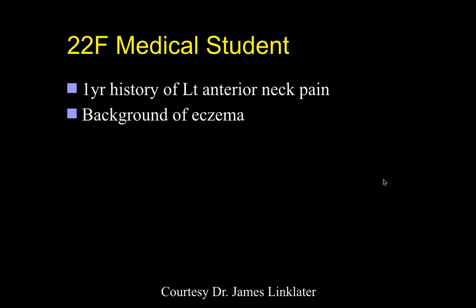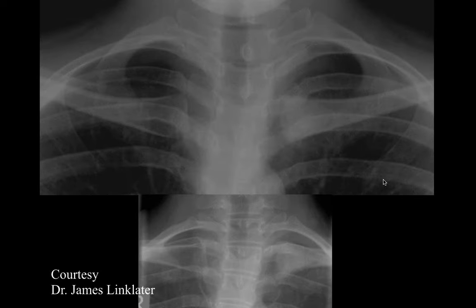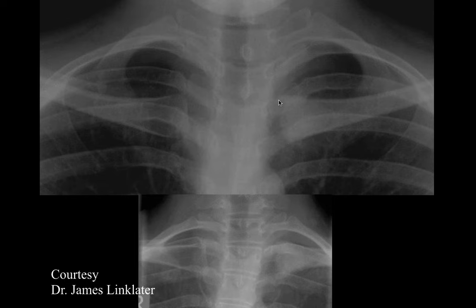22-year-old medical student with left anterior neck pain. On radiograph, there is irregularity at the proximal clavicle — a subtle lucency with indistinct cortical margins and sclerosis of the proximal centimeter and a half of the clavicle. The indistinctness of the cortical margin is well seen on the right side of the image with sclerotic change within the bone.